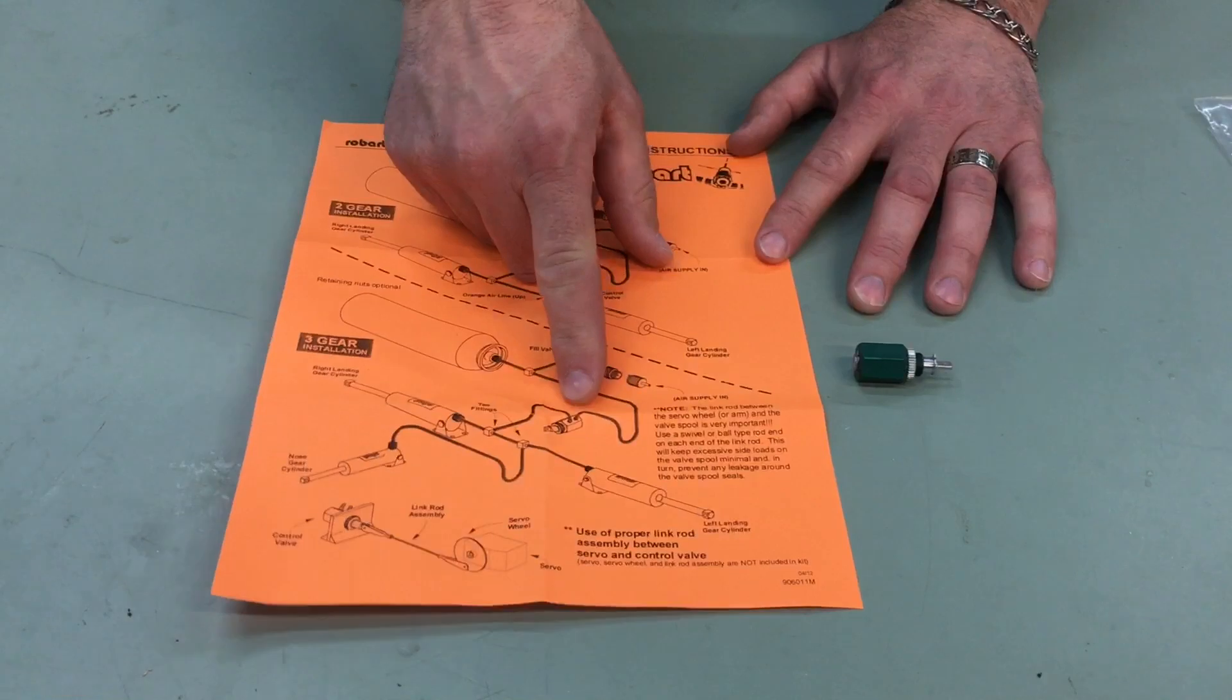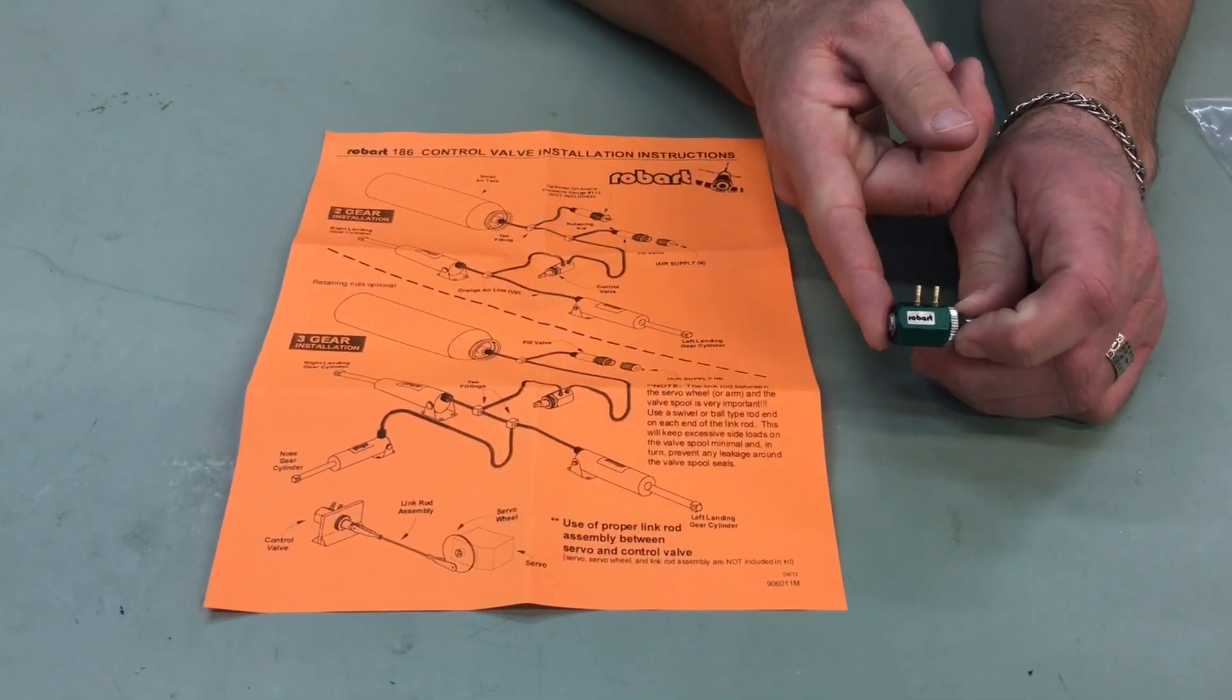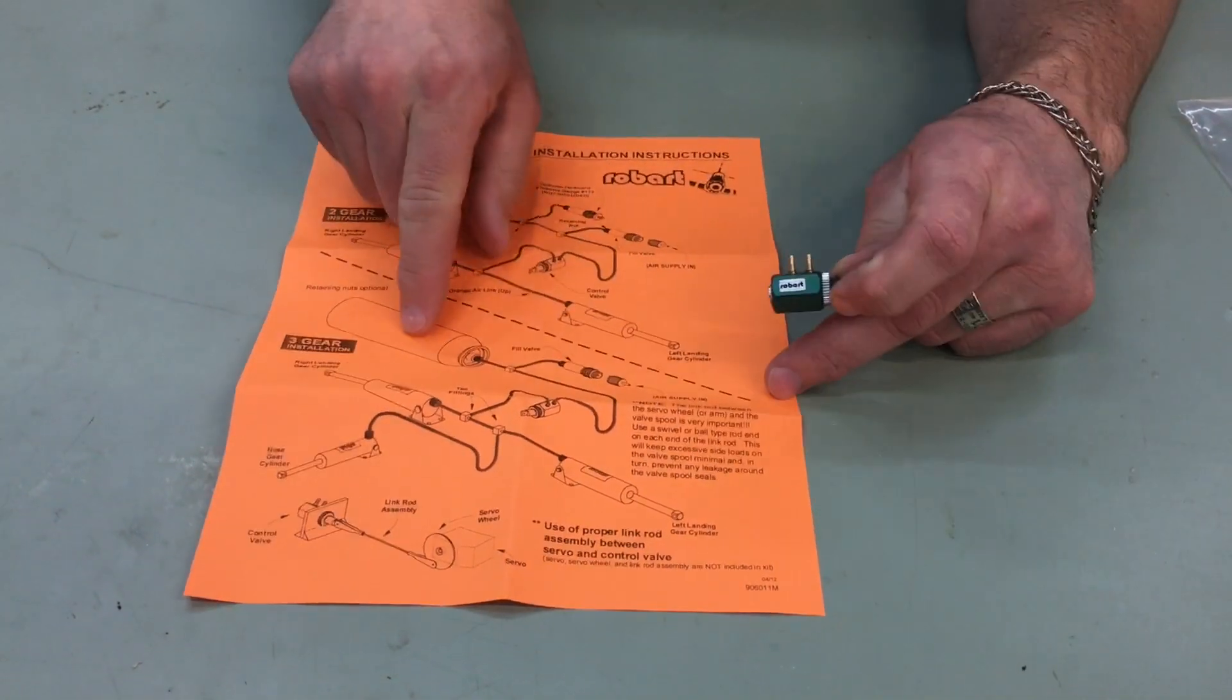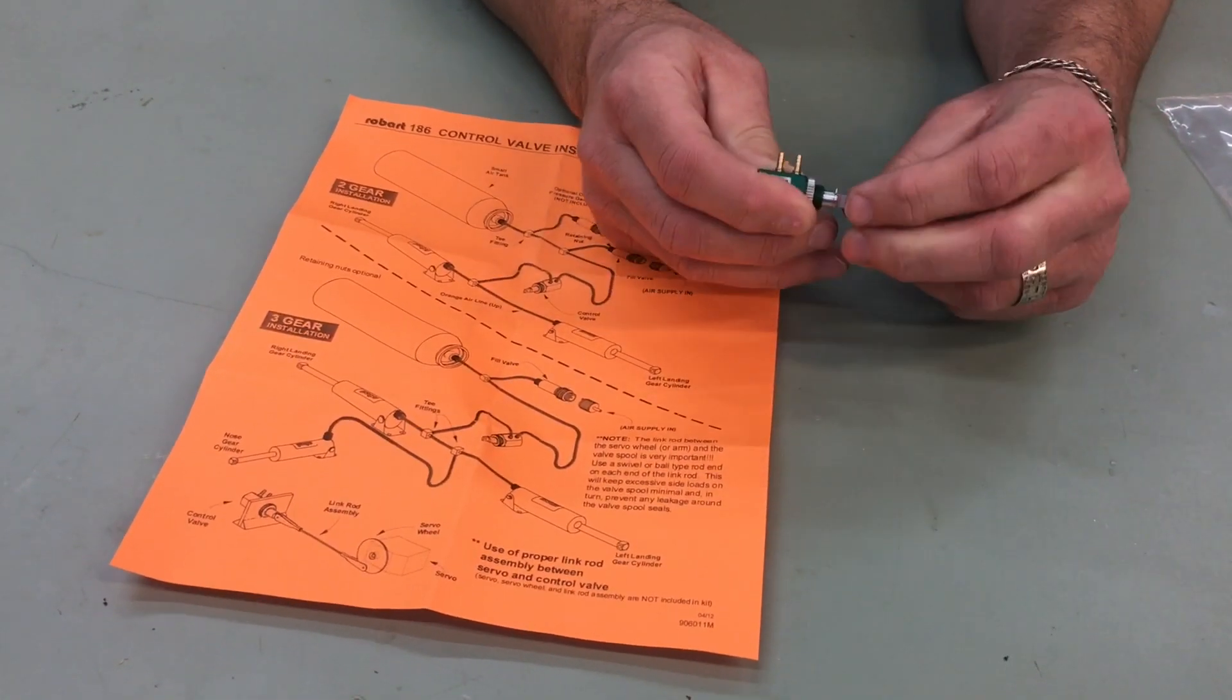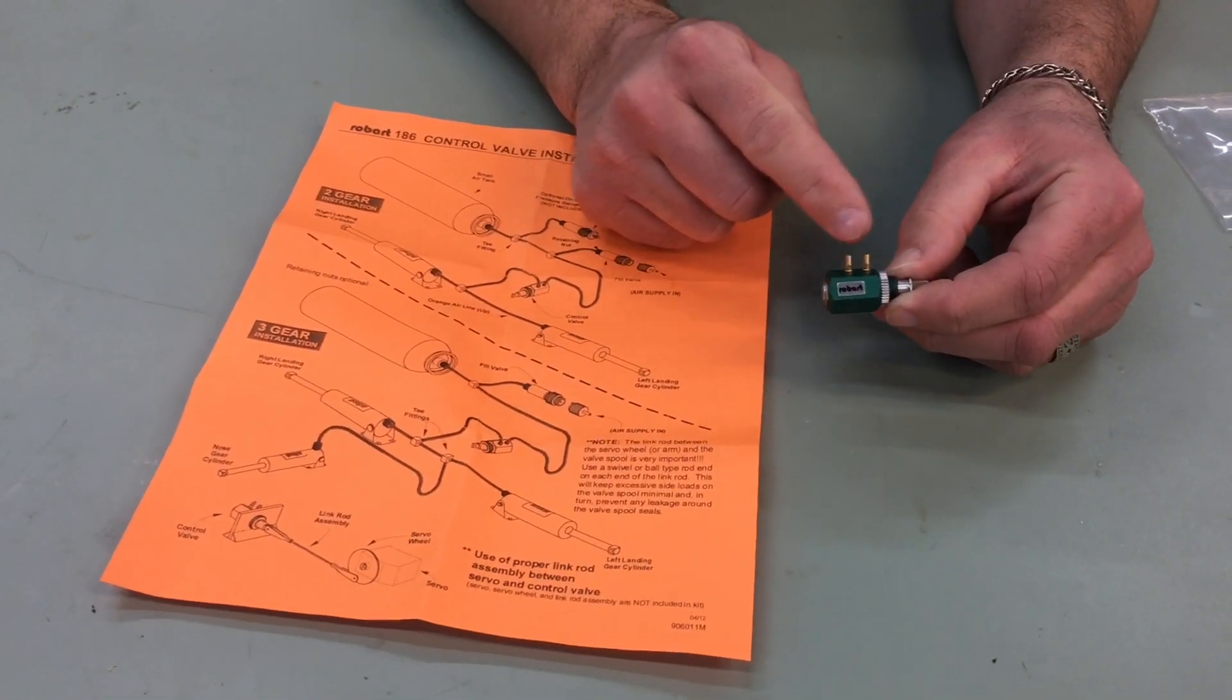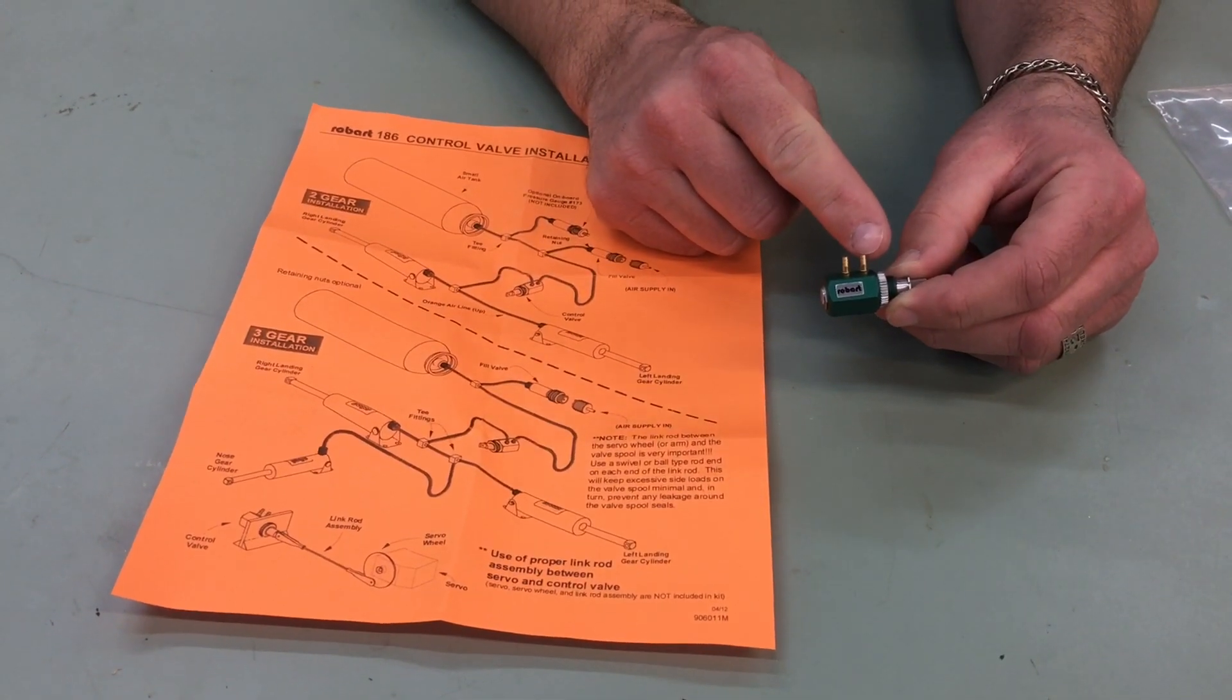But down here is the most important. So right here is what we're talking about today which is the green valve. So what you have is your air tank comes in to the nipple that is away from your valve stem. Okay so your air in is away from the valve stem, your air out is towards the valve stem.